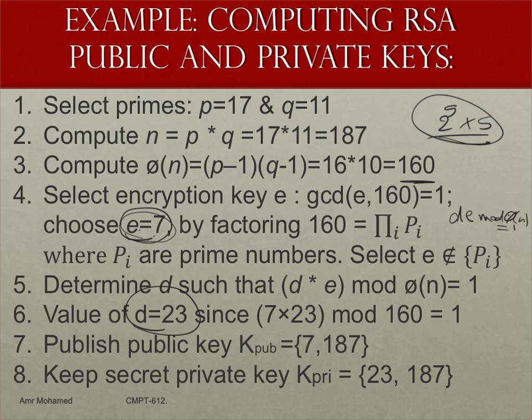Once we have D, the private key becomes the value of E and the value of N, and the public key becomes the value of D and the value of N.